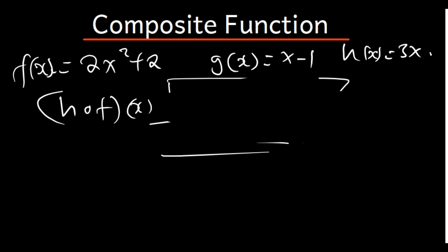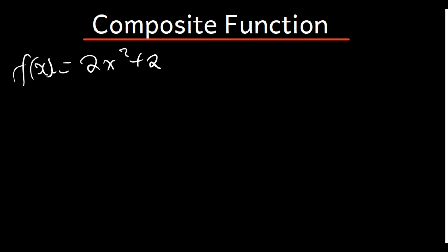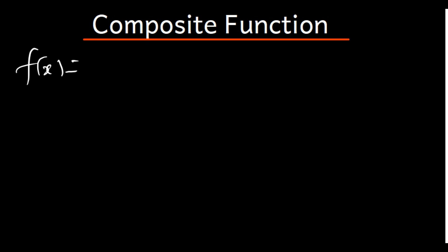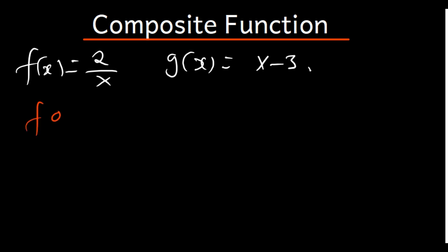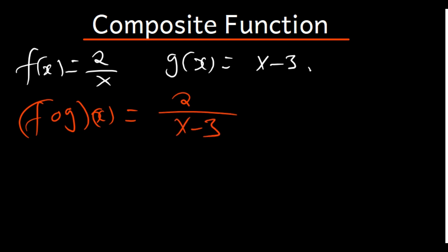Now let's look at a different question with just two functions. Let's say f(x) = 2/x and g(x) = x - 3. If we want to find f of g of x, in the function f, where there is x, we put g. So it's going to be 2 divided by (x - 3). That is our answer.